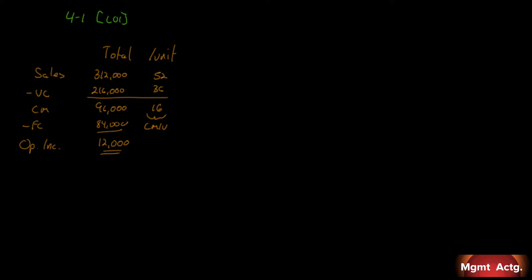Scenario one says the sales volume increases by 200 units. We need to know how many units we're currently selling. We have total sales of $312,000 divided by $52 per unit, which gives us 6,000 units. So with the increase, we now have 6,200 units.